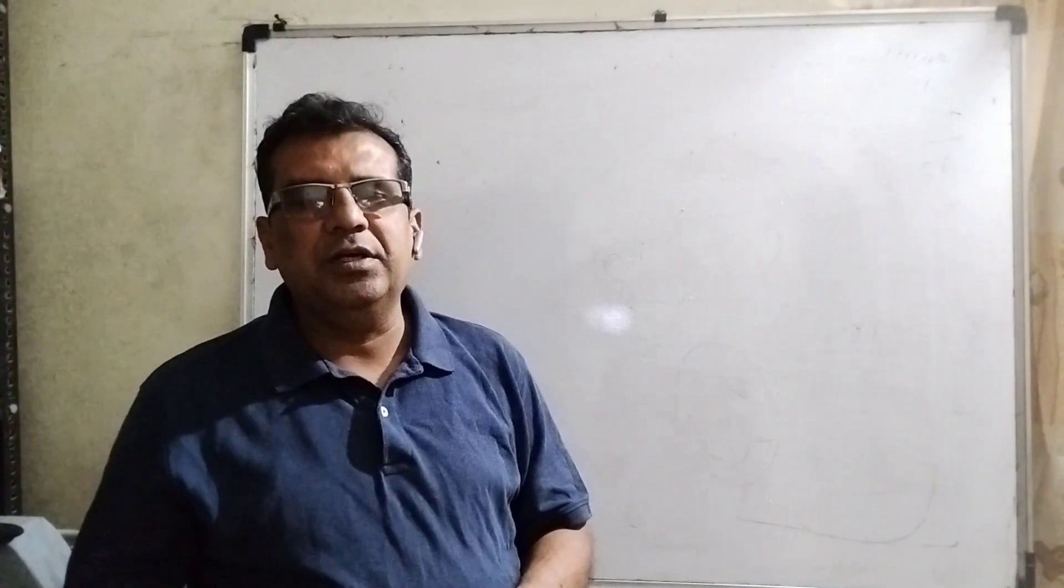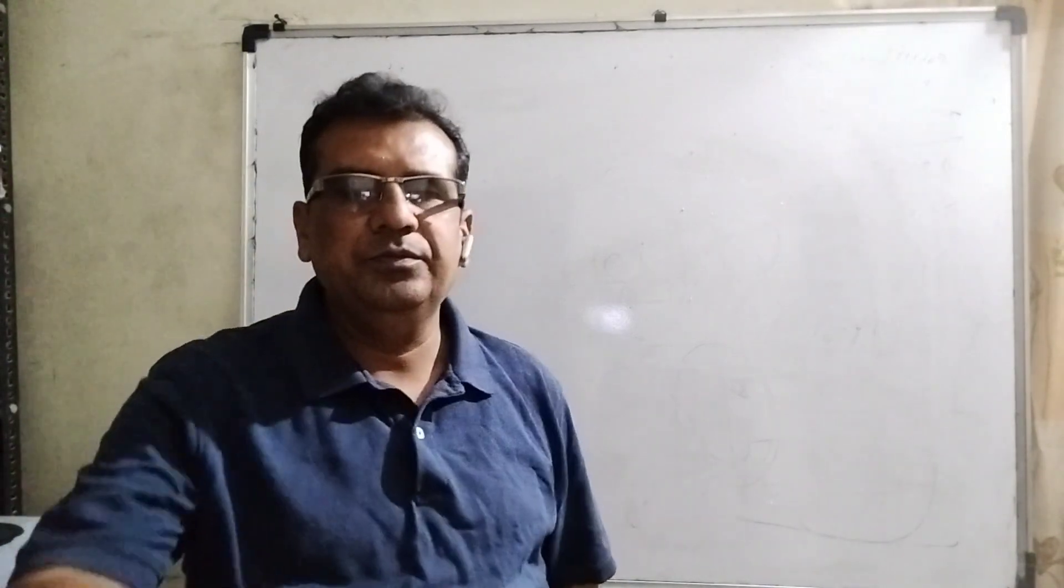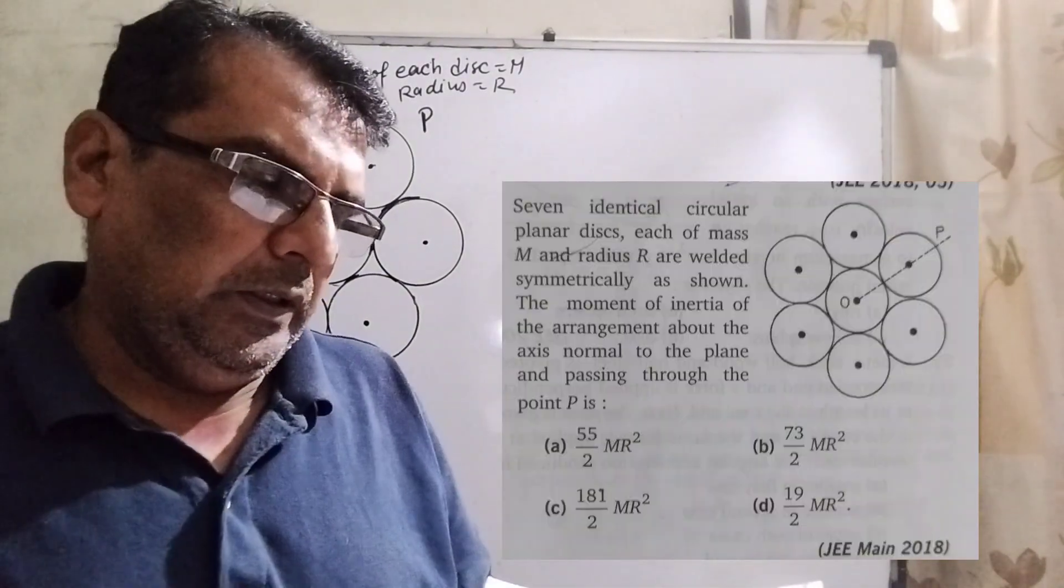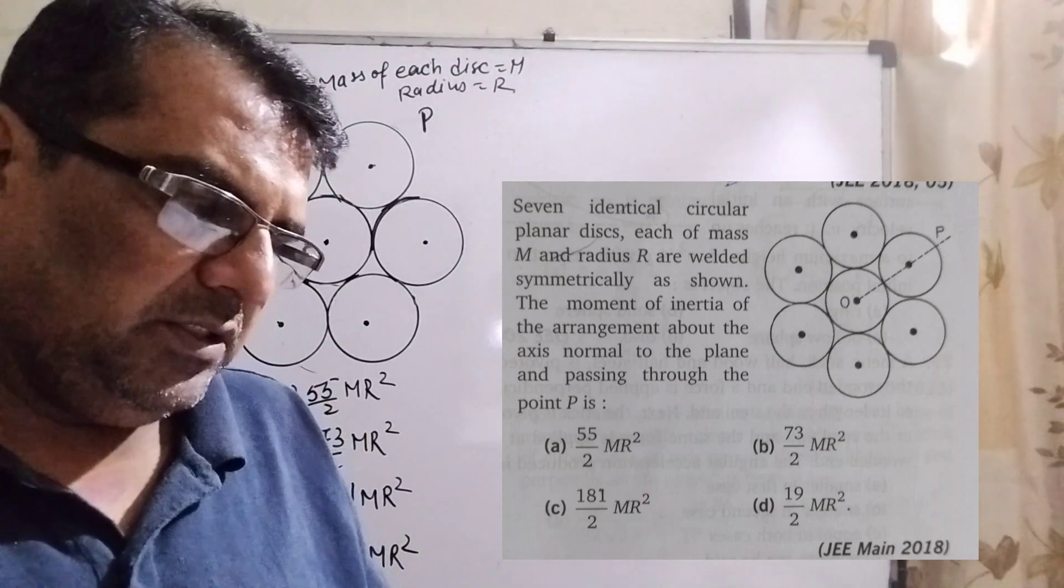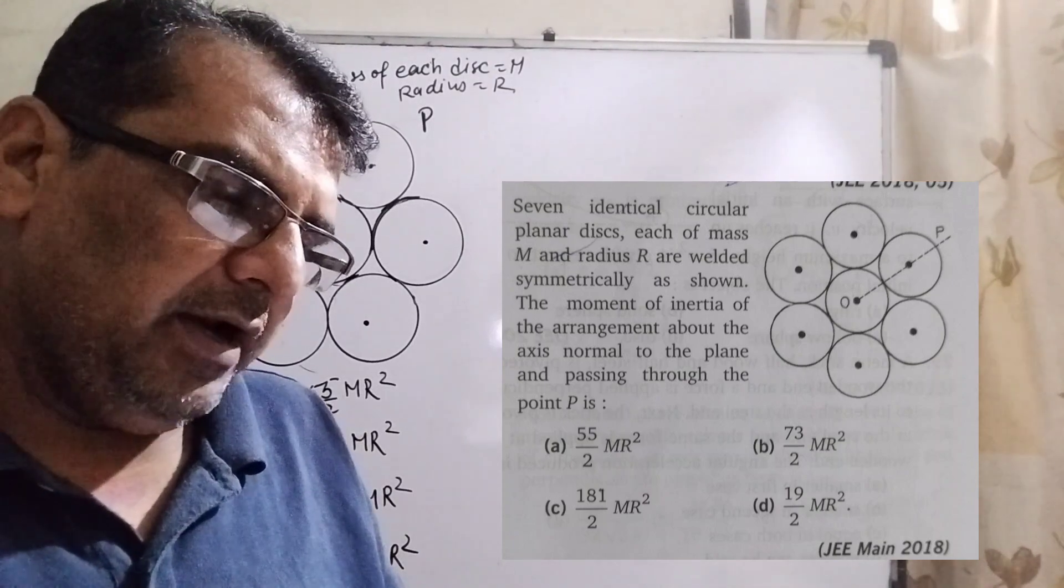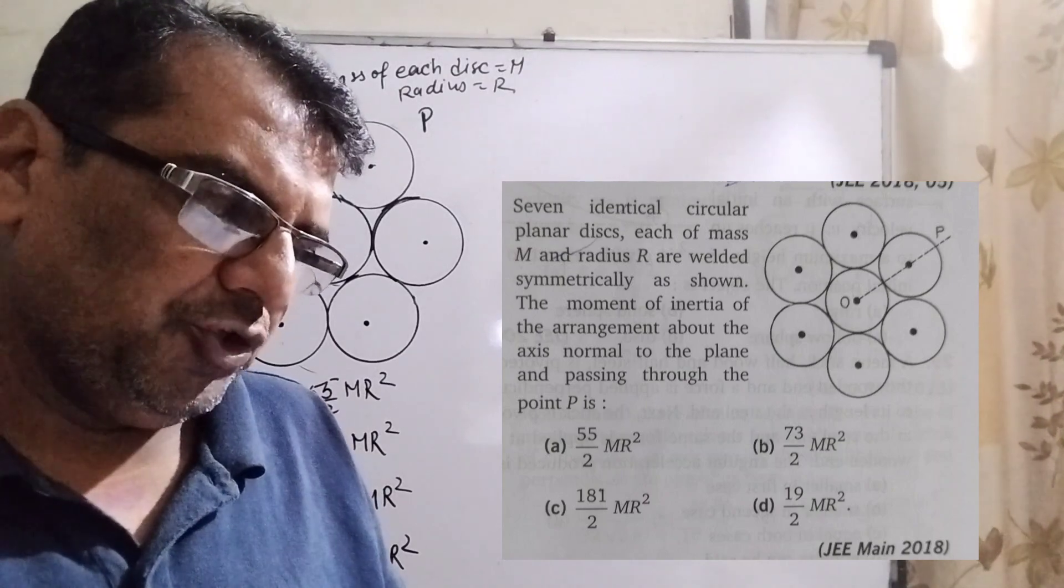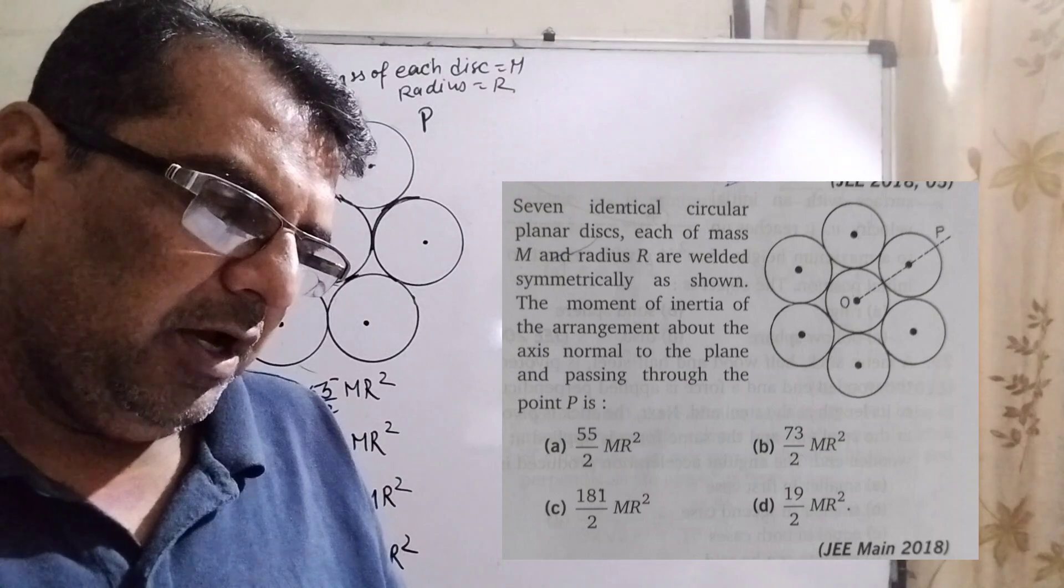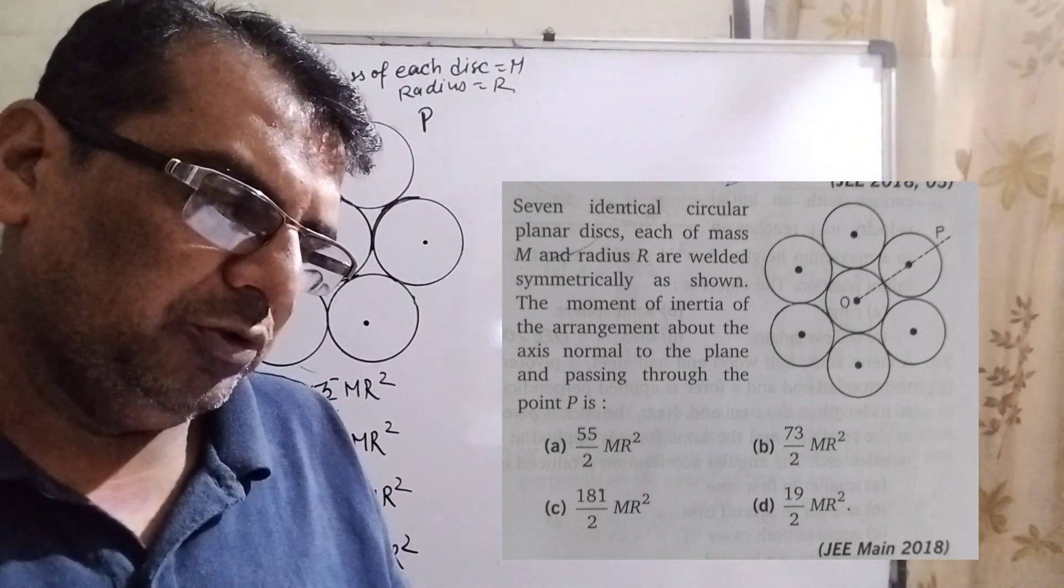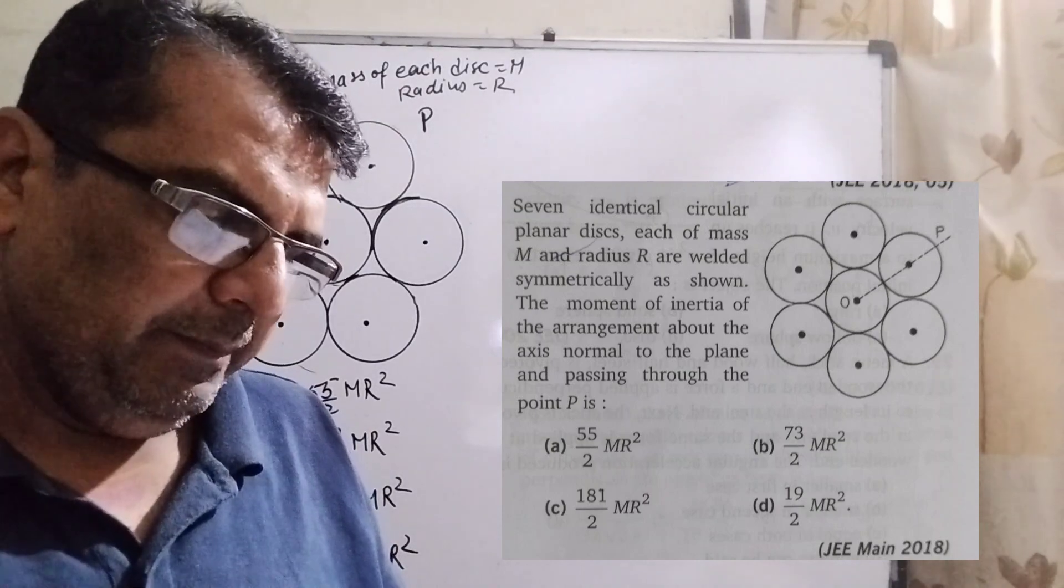like, share and subscribe to my channel so it can reach more students. Thank you. The question says: Seven identical circular planar discs, each of mass capital M and radius capital R, are welded symmetrically as shown. The moment of inertia of the arrangement about the axis normal to the plane and passing through point P is - you